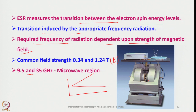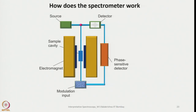This is how a typical EPR instrument looks: the magnetic field is here, the sample is kept here, and the signals go to the detector and then to the plotter for plotting the spectrum. The spectrometer has a source, a detector, a sample cavity, an electromagnet, a phase sensitive detector, and modulation input.